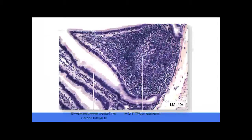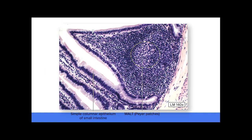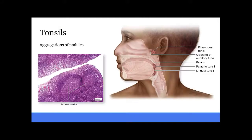Here's a picture of the small intestine showing a Peyer's patch. And here is a picture showing some tonsils — we have the pharyngeal tonsils, the palatine tonsils, and the lingual tonsils.